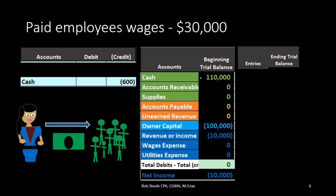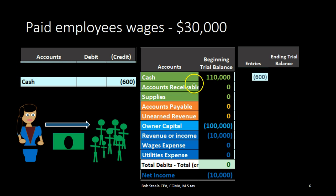The credit is going to go on the bottom — I left some space here, thinking about cash first even though it is the credit. Credits traditionally go on the bottom. If we were to post it, cash has a debit balance and we're going to credit it, which will make cash go down from 110,000 in this case by 600, to 109,400.